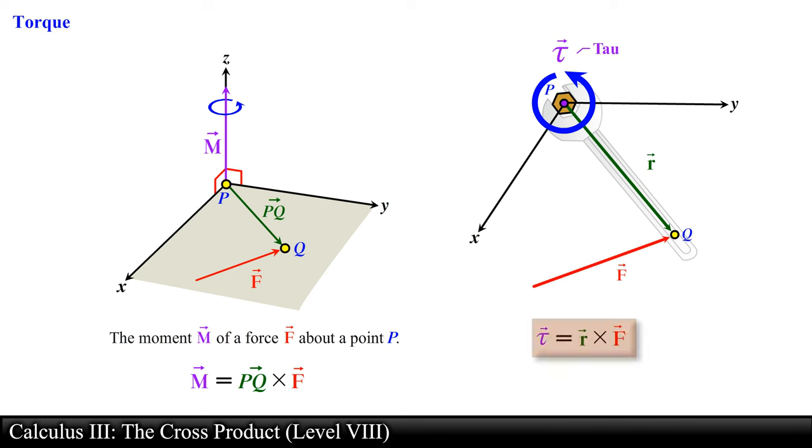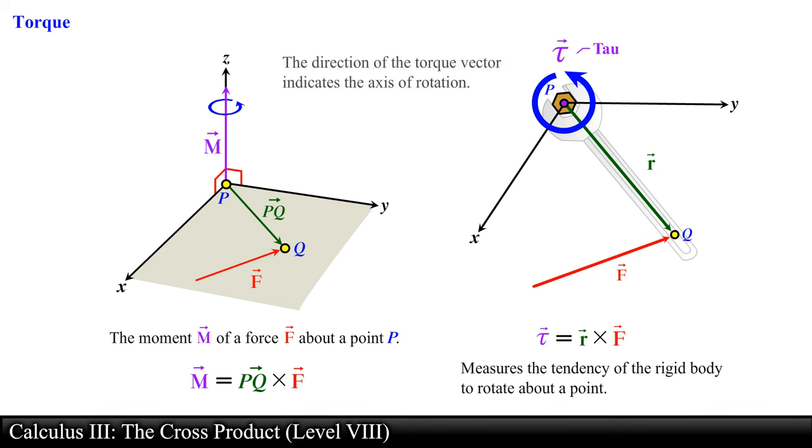The vector produced from the cross product of these two vectors measures the tendency of the rigid body to rotate about the origin. The direction of the torque vector indicates the axis of rotation. So the bolt and the wrench will rotate about this axis.